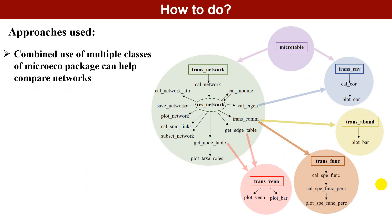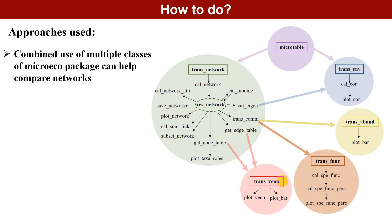In this study, all the classes and functions used come from our micro-package. For example, we use the trans_venn class to study the intersections of nodes and edges, and the trans_env class to study the paths related with other environmental factors.